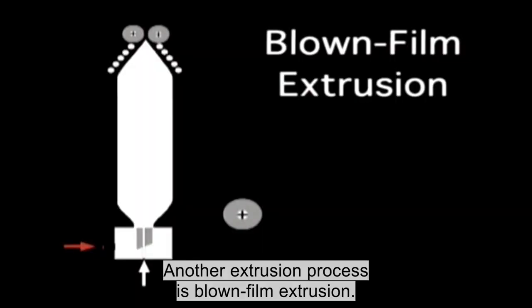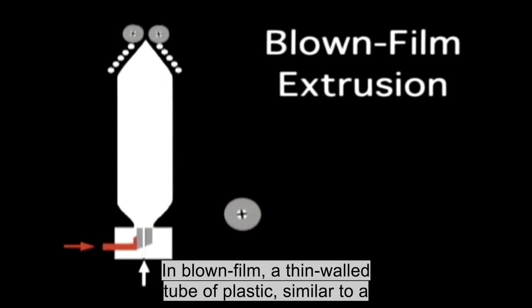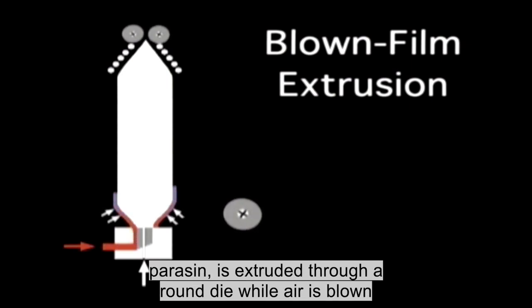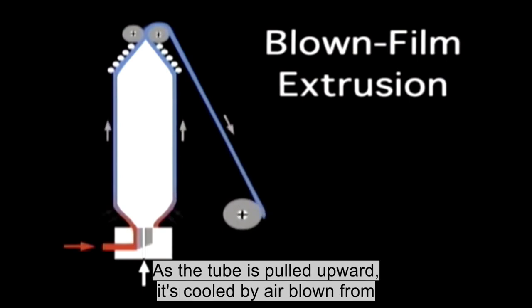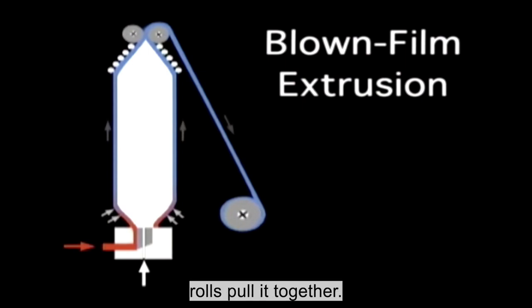Another extrusion process is blown film extrusion. In blown film, a thin-walled tube of plastic similar to a parison is extruded through a round die while air is blown inside to stretch the tube to a larger diameter. As the tube is pulled upward, it's cooled by air, blown from a cooling ring, and is then flattened as rolls pull it together.